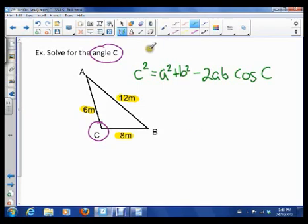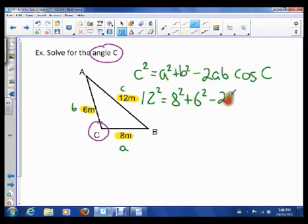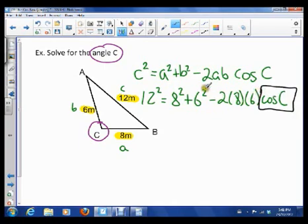So what we're going to do is we're again just going to fill in everything we know. So side C is 12, so 12 squared. A is 8, so here's A, B, C, so A is 8, so 8 squared plus 6 squared minus 2 times 8 times 6 cosine C. And now all we have to do is we have to use our algebraic skills to solve for cos C.